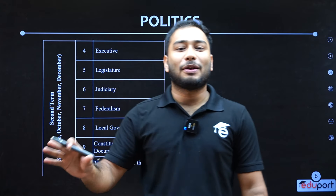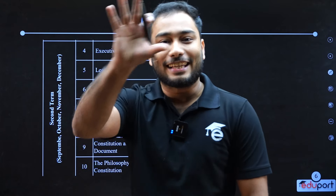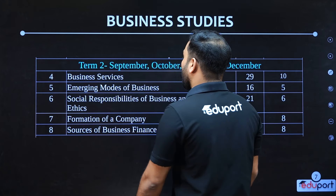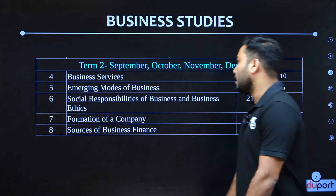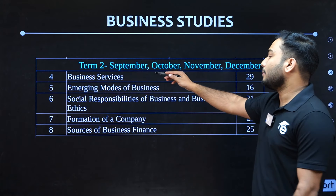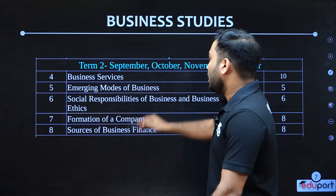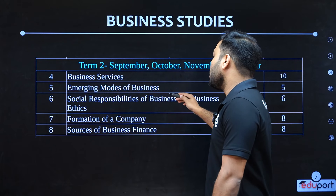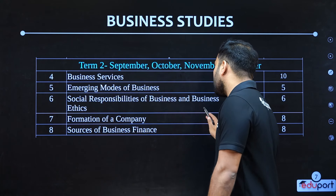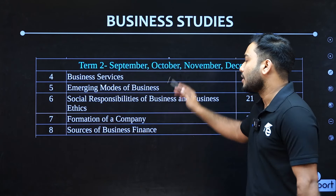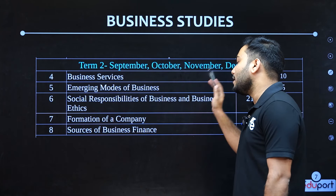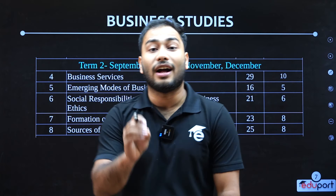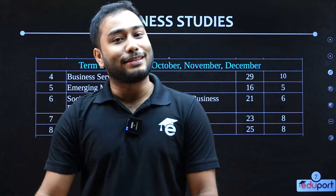You can learn for the Christmas exam. This is Plus 1 — the 4th chapter includes Business Service, Emerging Model of Business, Social Responsibility of Business and Business Ethics, Formation of a Company, and Source of Business Finance. This is for the Christmas exam.